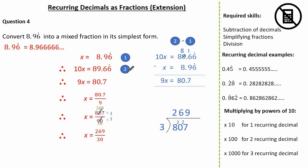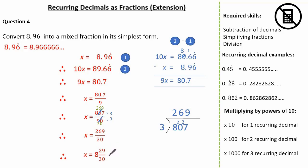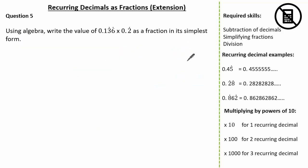Because the question wanted us to write the answer as a mixed fraction, how many 30's go into 269? 8. So what's left over? 8 times 30 is 240, we have 29 remaining. So our final answer is 8 and 29 over 30.